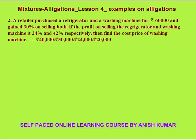Next example: a retailer possesses a refrigerator and a washing machine for a total of 60,000 and gained 30 percent on selling both. This 30 percent is the total profit percent on the combination. The profit on selling the refrigerator and washing machine individually is 24 percent and 42 percent respectively. We need to find the cost price of the washing machine. This is a profit and loss question, but we can also apply allegation.